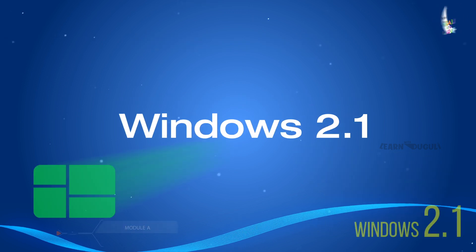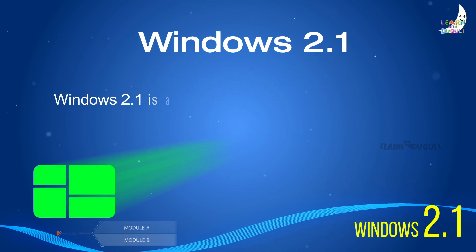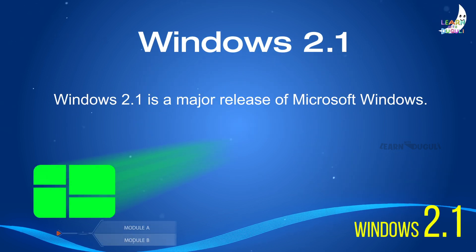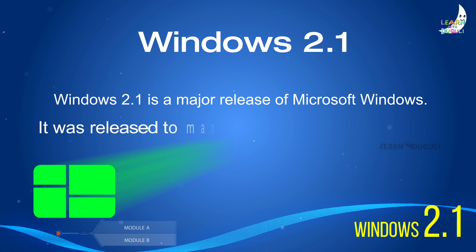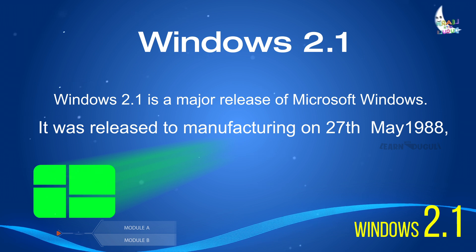Windows 2.1 is a major release of Microsoft Windows. It was released to manufacturing on 27 May 1988.